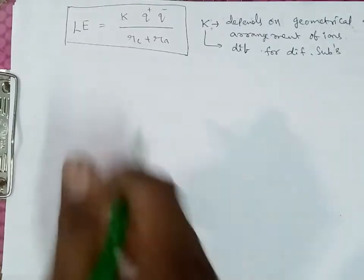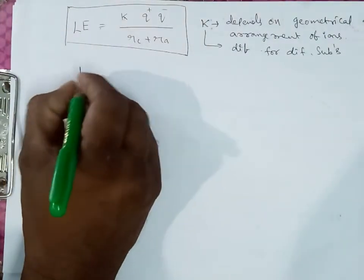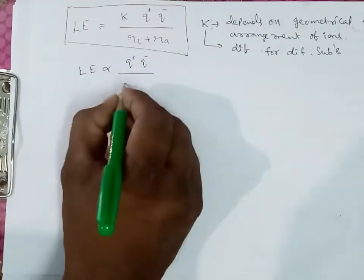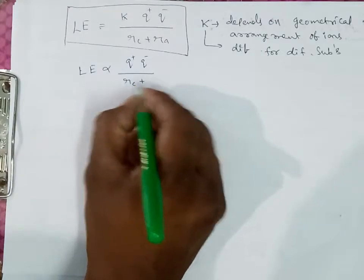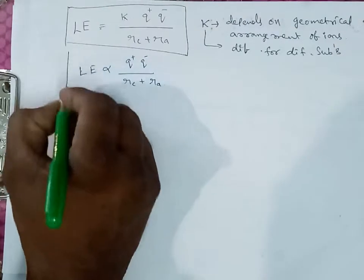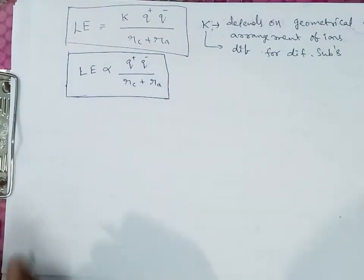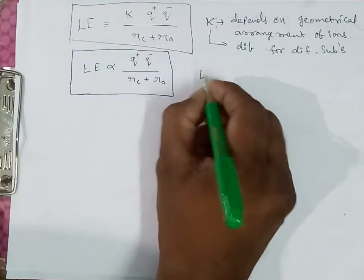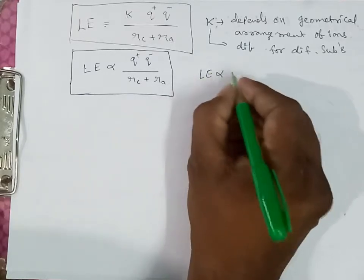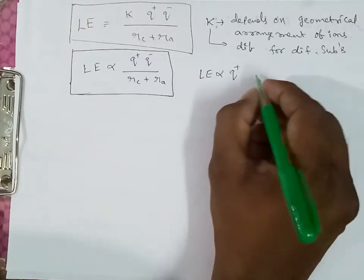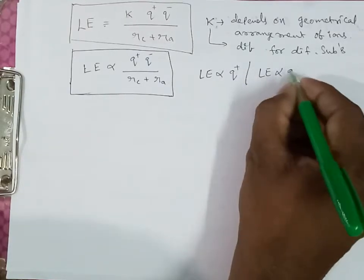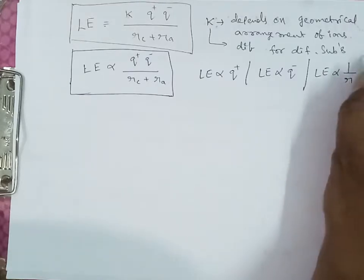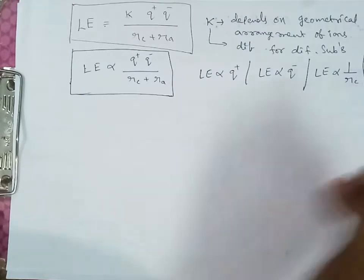When we remove k, we get the proportional relation: lattice energy is proportional to (q+)(q−) divided by (r_c + r_a). From this relation we derive four sub-relations: lattice energy is directly proportional to the charge on the cation; directly proportional to the charge on the anion; inversely proportional to the radius of the cation; and inversely proportional to the radius of the anion.